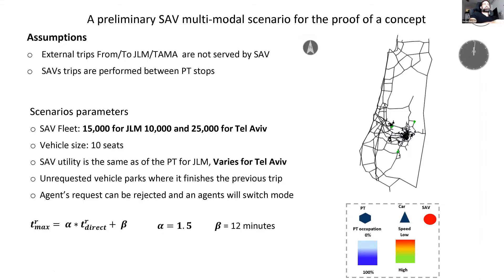Here are the assumptions. External trips from and to the Jerusalem and Tel Aviv metropolitan areas are not served by SAVs, meaning only internal trips within Jerusalem are served by shared automated vehicles.